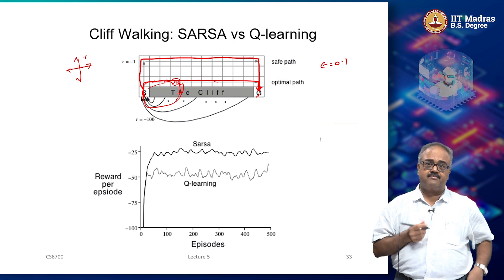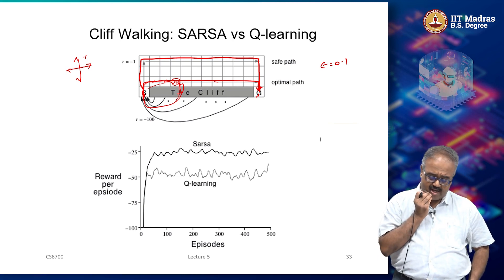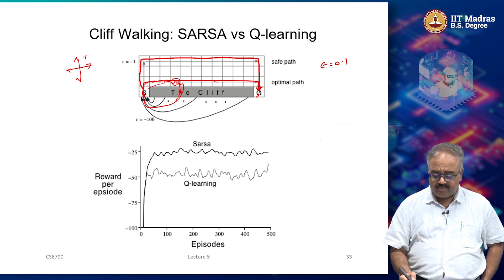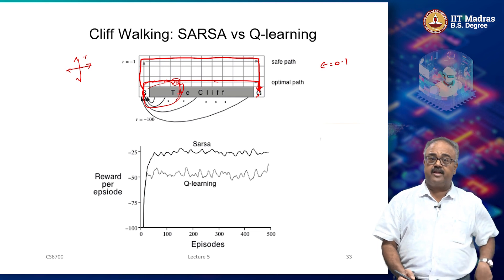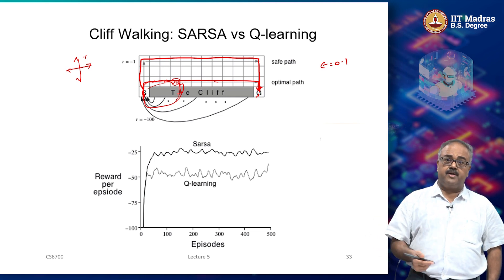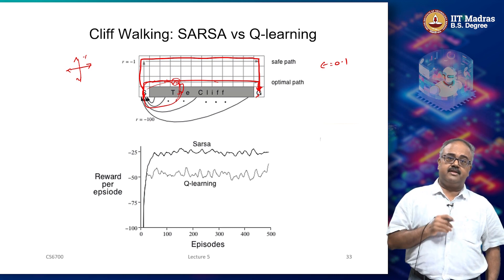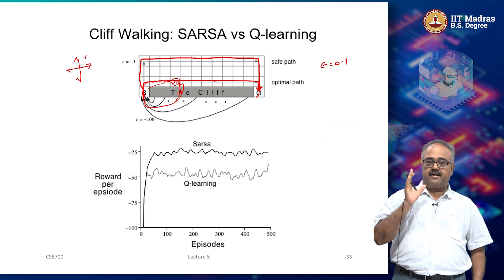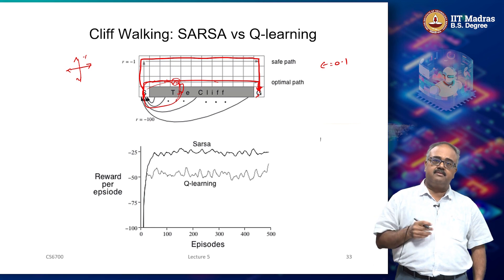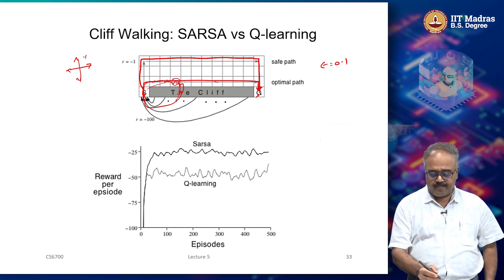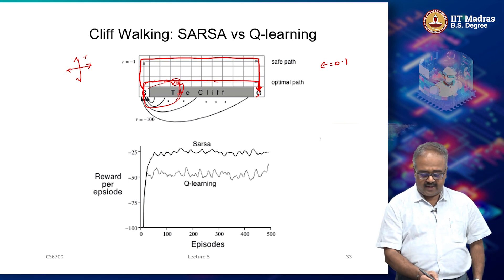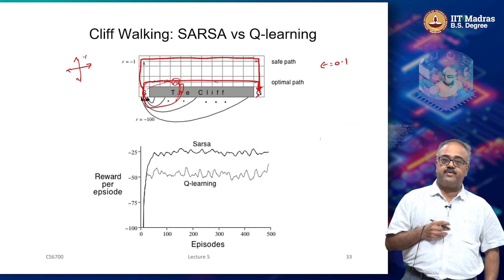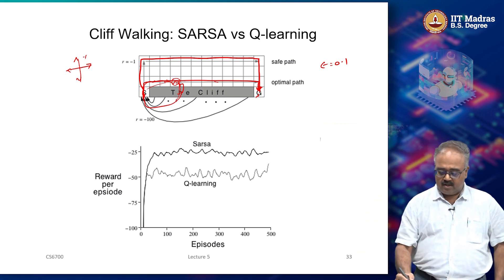This also shows up in the learning curves: Q-learning converges to about minus 50 expected reward because it keeps falling off the cliff occasionally — even though the probability is very small (epsilon divided by 4), it still incurs the minus 100 penalty. SARSA has an expected reward of about minus 25 over the learning period, showing the safer path leads to better online performance.